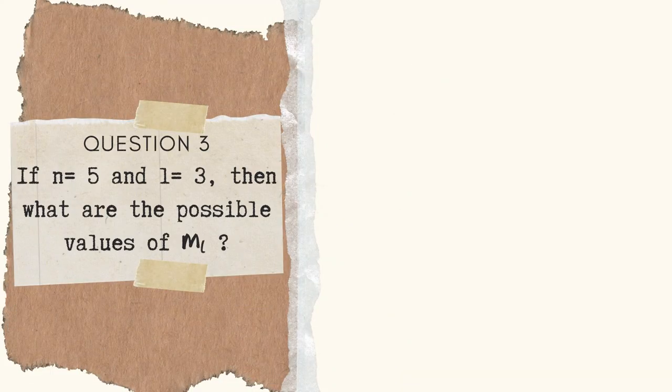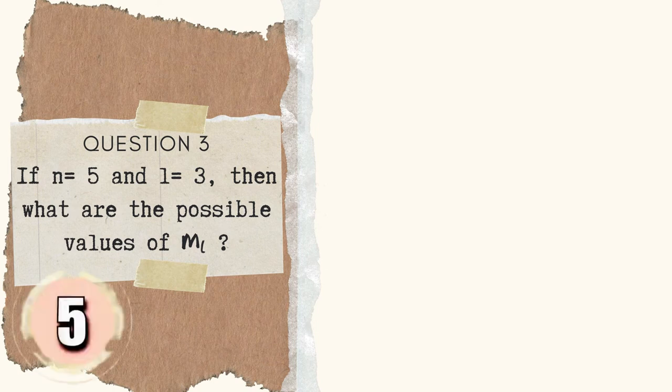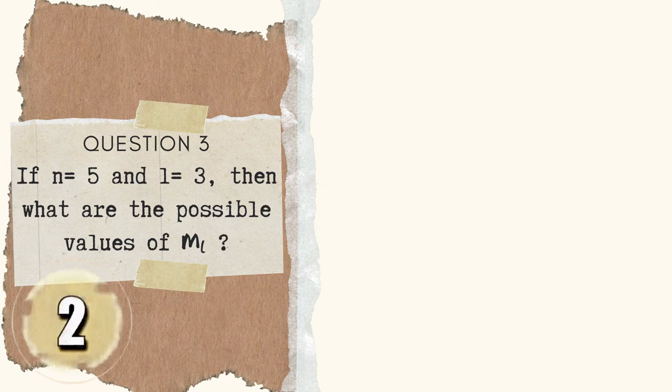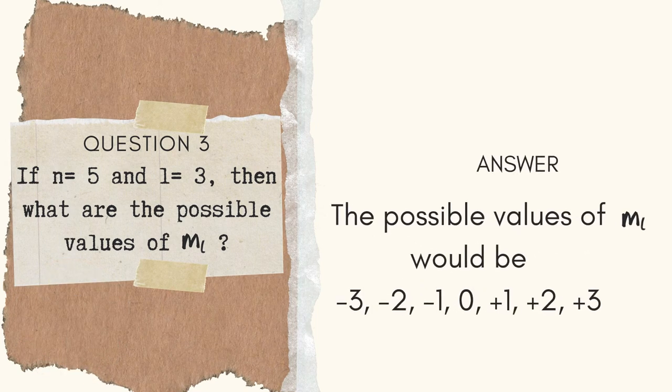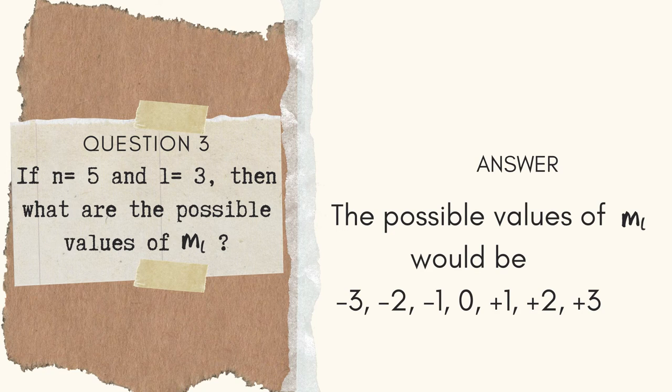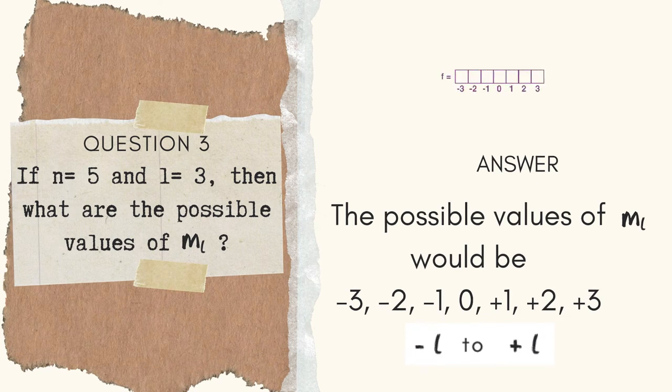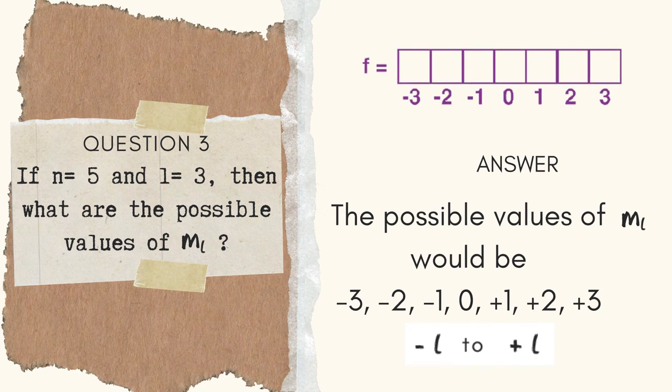Question number 3. If N is equal to 5 and L is equal to 3, then what are the possible values of M sub L? The possible values of M sub L would be negative 3, negative 2, negative 1, 0, positive 1, positive 2, and positive 3. Since M sub L must range from negative L to positive L. It also indicates that there are 7 orbitals available for electrons in the F sub-level or F orbital.